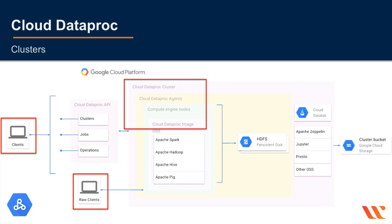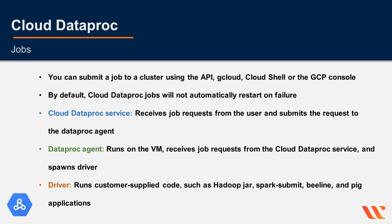There are many layers in Dataproc. There is the Dataproc cluster, agents, the Compute Engine nodes, and the Dataproc image. Raw clients can connect directly to the Compute Engine nodes through the Dataproc agents, while regular clients can use the Dataproc API to access clusters, jobs, and operations outputs. You can also see the cluster bucket and Cloud Storage on the side. You can submit a job to a cluster using the API, gcloud, Cloud Shell, or the GCP console.